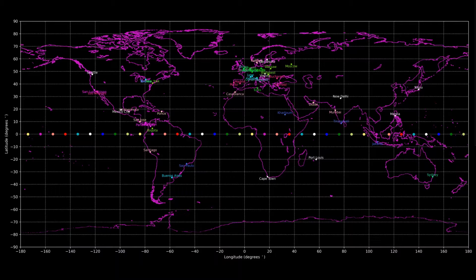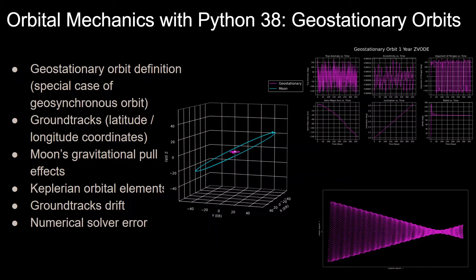And here are the ground tracks corresponding to the satellites in the animation, where they are all constantly hovering over the Earth's equator, so their ground tracks are just stationary points along this latitude equal to zero line. As always, leave a comment below if you'd like me to add your city into the ground track plots for future videos.